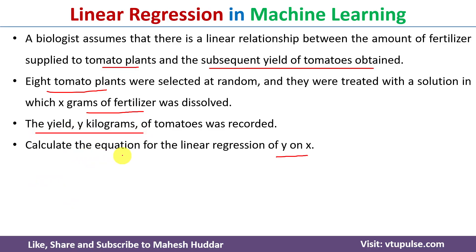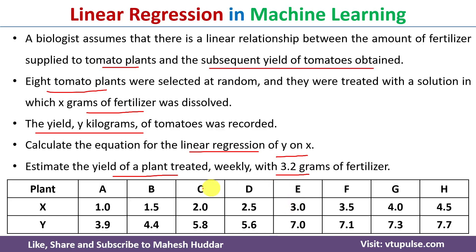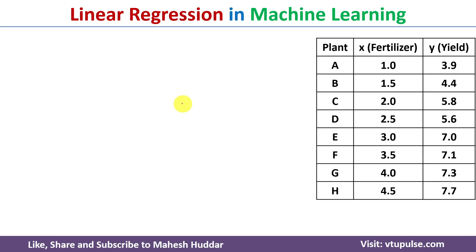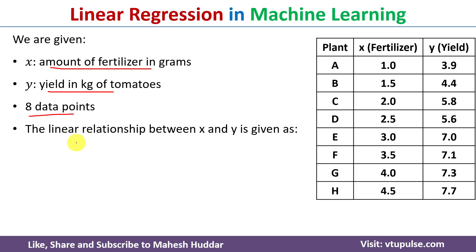The yield y kilograms of tomatoes was recorded. We need to find the equation for linear regression of y on x, and then estimate the yield of the plant treated with 3.2 grams of fertilizer. The dataset considers eight tomato plants from A to H, where x is the independent variable (fertilizer in grams) and y is the dependent variable (yield in kg). To find the linear relationship we use the equation y = a + bx.